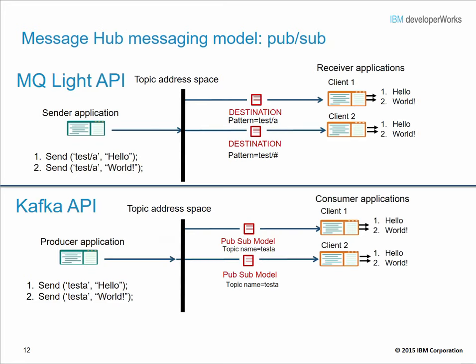Now let's look at the publish-subscribe messaging model. In the MQ-Lite API, receiver applications can use wildcards instead of actual topic hierarchy names. In this example, client 2 uses test/# to match the topic test/A. In the Kafka API, actual topic names are used and there is no concept of hierarchy or wildcard characters. Here, two clients both receive messages sent to the topic test A by using the actual topic name.